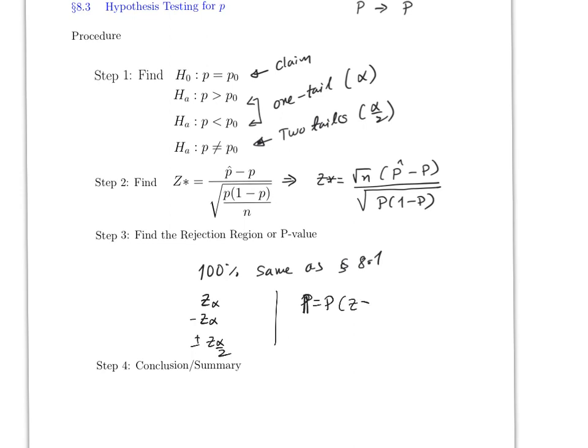And for the p-value it's going to be the probability that z is greater than z-star, or the probability that z is less than z-star. And when it's two tails, the probability that z is greater than the absolute value of z-star, and you multiply this by two.